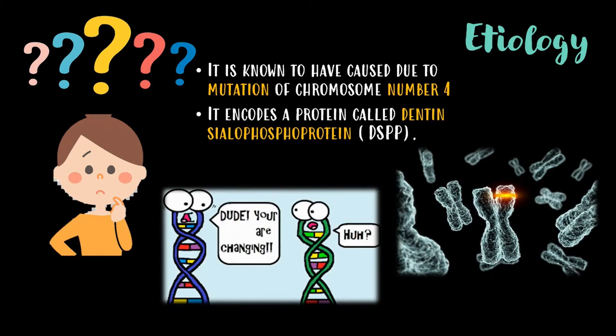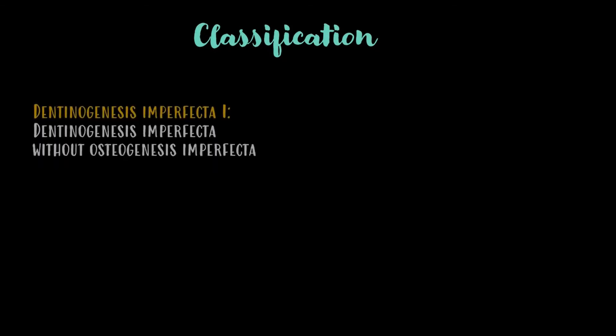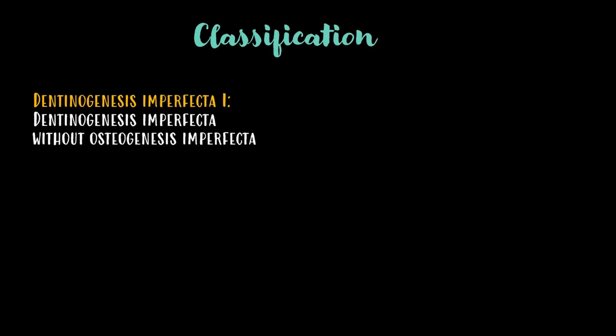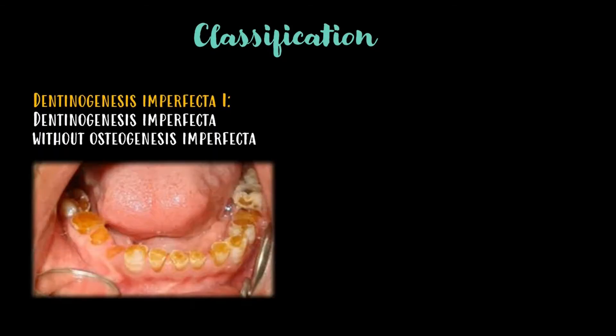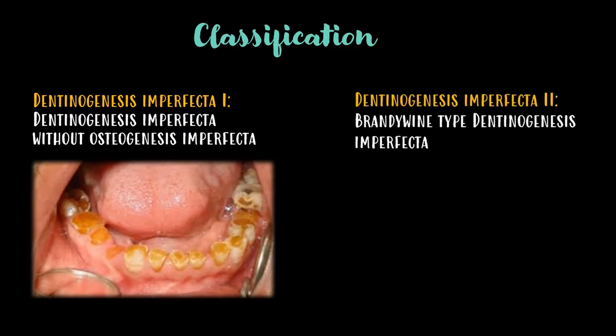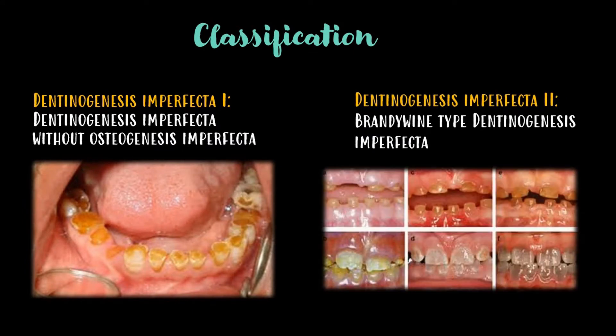It is broadly classified into Dentinogenesis imperfecta Type 1, which is Dentinogenesis imperfecta without osteogenesis imperfecta, and Dentinogenesis imperfecta Type 2, which is the Brandywine type of Dentinogenesis imperfecta.